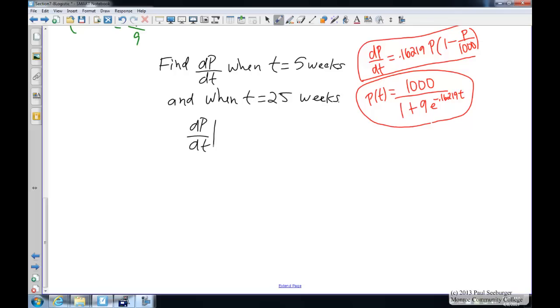dp/dt for t equals 5 weeks is going to be equal to 0.16219 times the population. Do you remember what the population is in 5 weeks? Yep, 200 fish. So we're going to plug 200 in for our population p here. So we have times 200 times 1 minus 200 over 1,000. That's 1 fifth or 0.2, gives us 25.95.